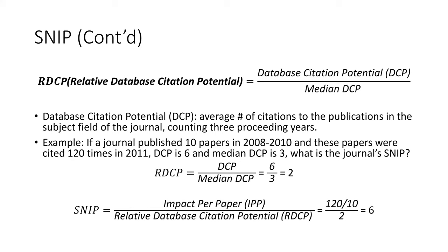Next, we need to calculate the impact per paper. The impact per paper is 120 divided by 10, which equals 12. Finally, the Source Normalized Impact per Paper of this journal is 12 divided by 2, which equals 6.